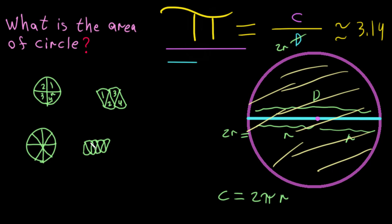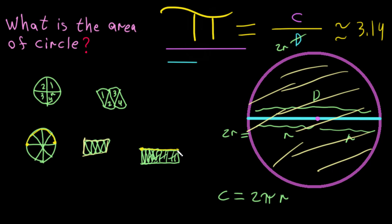Now the rearranged shape looks like a rectangle. If I cut the circle into more and more pieces and rearrange them, the shape looks more and more like a perfect rectangle. We know the distance across the top and bottom comes from the way we cut it.